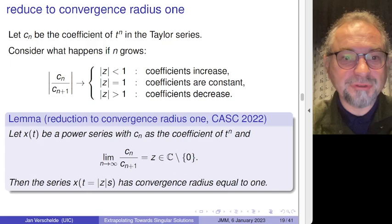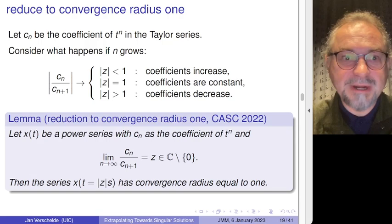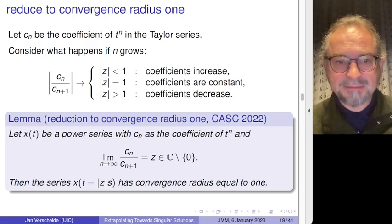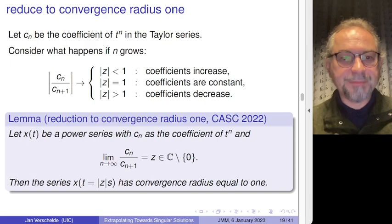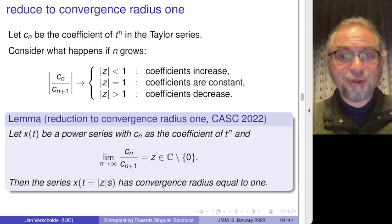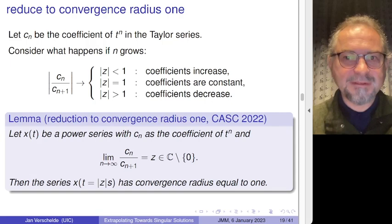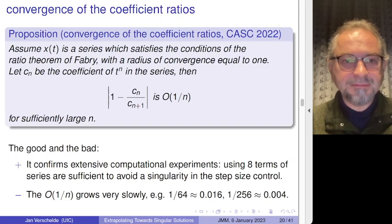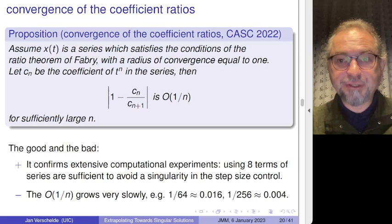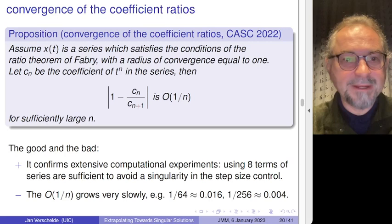What you want is that your coefficients remain of the same magnitude — if possible, constant. If they remain constant, you have convergence radius one. If you know what the convergence radius is, it's just a simple coordinate transformation — that's what I meant when I said the lemma is mathematically trivial. If you know the convergence radius, you just do this coordinate transformation. But this is actually critical: we are in the theoretical part, and we are interested in examining how good the Fabry ratio theorem actually is — can you say something with Taylor series about something quite far away?